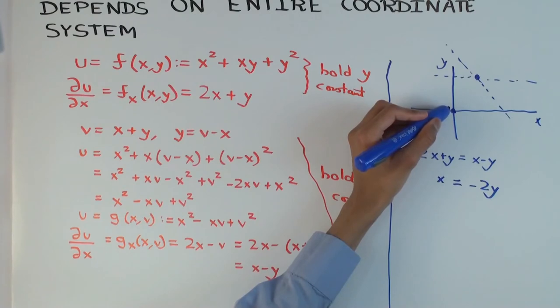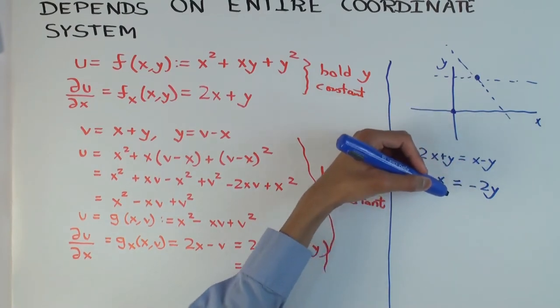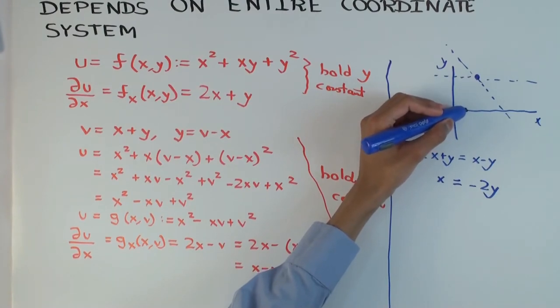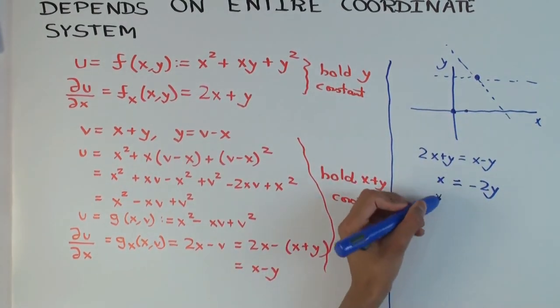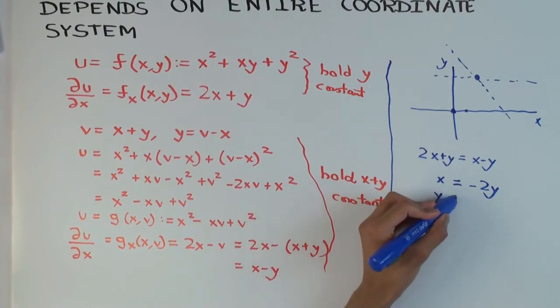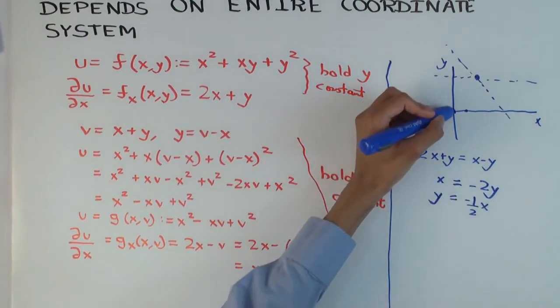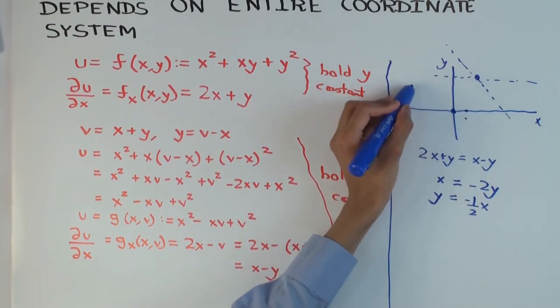And then for y, for x equals 1, y will be minus, wait, so x is, when x is 1, it's minus, minus 2. No. Y is minus 2. X is minus 2y. So you want to write y in terms of x, is minus half x. So when x is 1, y is minus half. So you'll get a line.